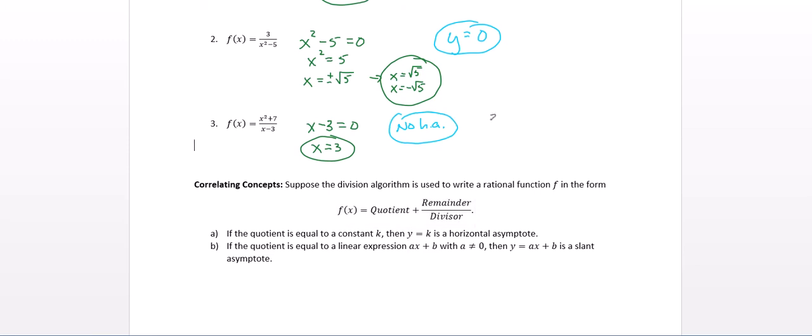Let's use synthetic division. If x minus 3 is the divisor, 3 goes in the little box. 1x squared, 0x's, and 7. Drop the 1. Multiply to go up and over. Add straight down. Multiply to go up and over. Add straight down. 9 and 7 has always been 16. So this is our remainder. Here's our expression. This is 1x plus 3. So it turns out we will have a slant asymptote of y equals x plus 3.